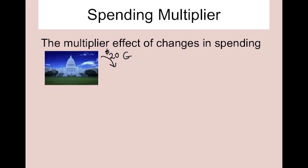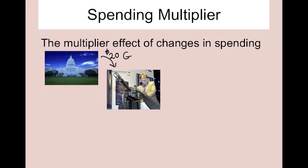If the government spent, let's say, $20 as an example — if they spent $20 and they bought some crazy gun operated by a guy in a yellow suit for $20. This guy in a yellow suit is going to earn the $20. And when he earns the $20, what do people tend to do with money they get? They spend it. So this $20 is going to be an increase in government spending, which is going to increase AD, leading to this person getting $20 and spending it.